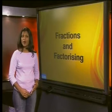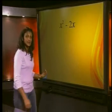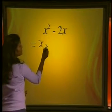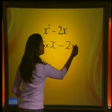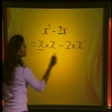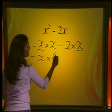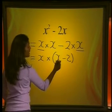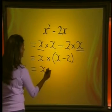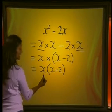Now let's revise the different ways that we can factorize algebraic expressions. We can factorize by taking out a common factor. We have two terms separated by a minus sign: x squared minus 2x, which we can write as x multiplied by x minus 2 multiplied by x. The x is the common factor. If you remove this common factor, we are left with x multiplied by x minus 2. So we can write this as x multiplied by x minus 2 — the original expression written as a product of x and x minus 2.